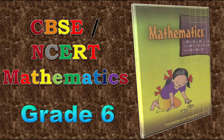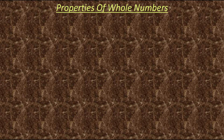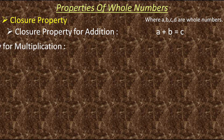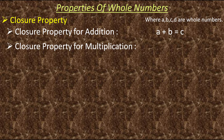Let's recall all the properties of whole numbers. The first property is closure property. Closure property for addition says that the sum of any two whole numbers is a whole number. Same way, closure property for multiplication says that the product of any two whole numbers is a whole number.